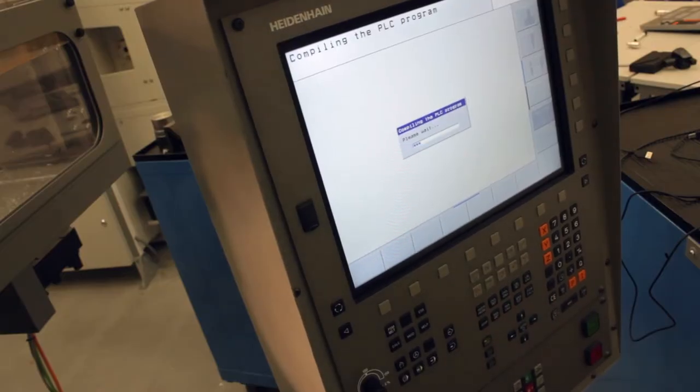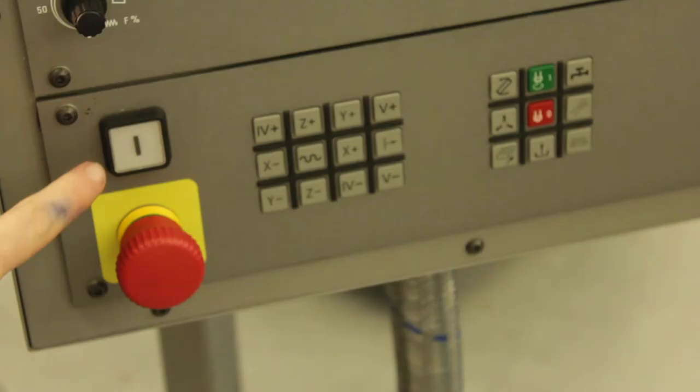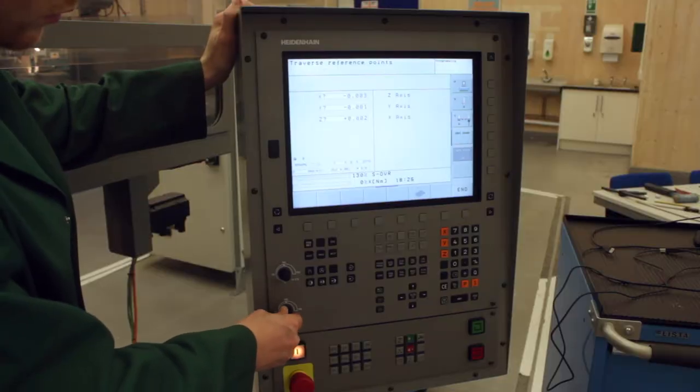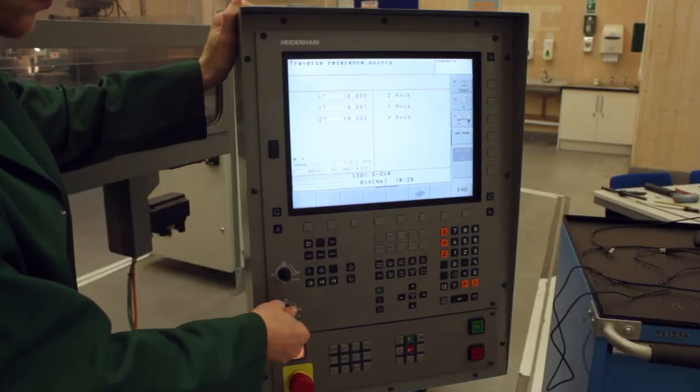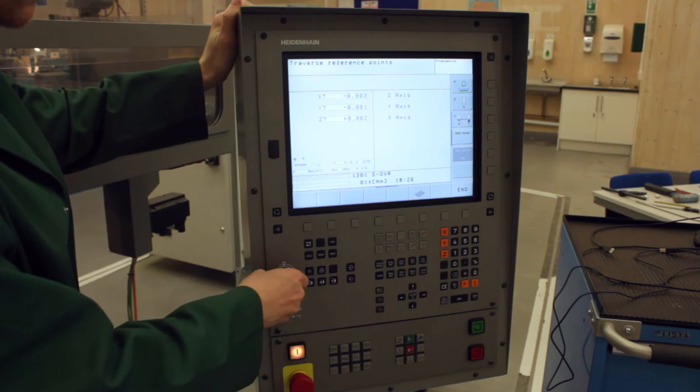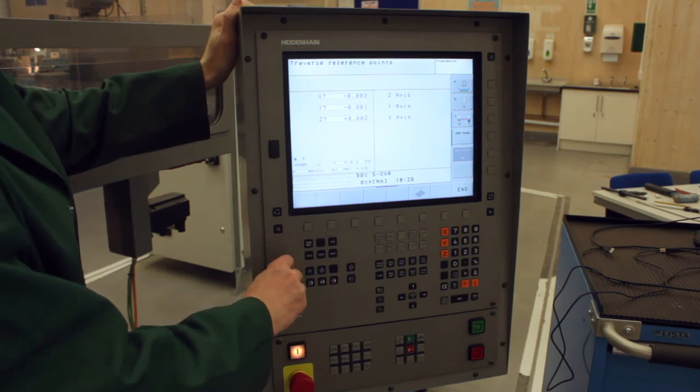You'll see a little progress bar. Once that's loaded it's time to give power to the control, so hit the power button and then adjust the spindle and feed override to 100% because we're going to jog the axes next.